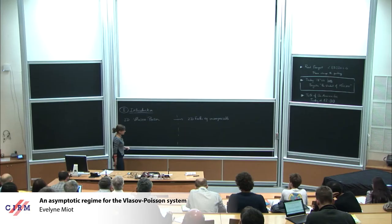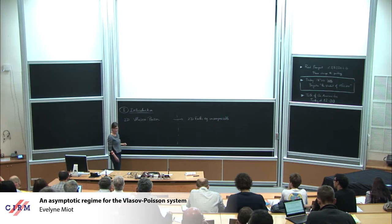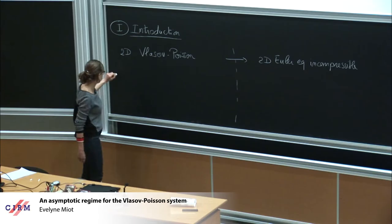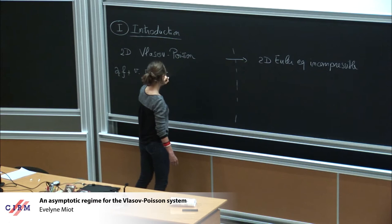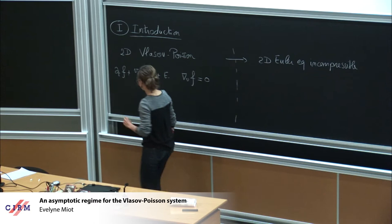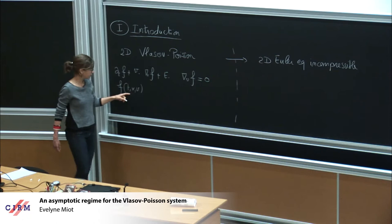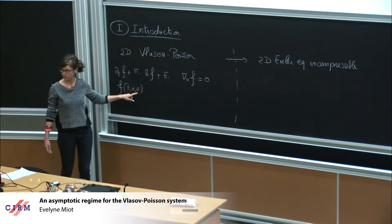What is the Vlasov-Poisson system? It's a system for a density of electric particles, and the unknown is the function f, which is the density. As I said, f is the density of particles which is defined in the phase space. x is the position of the particles and v is the velocity of the particles.